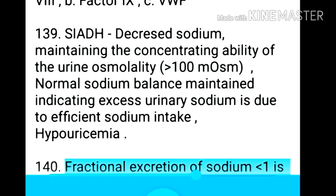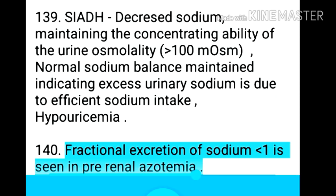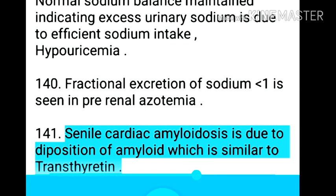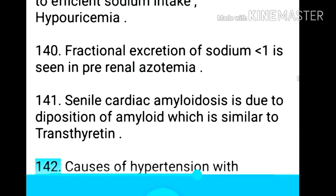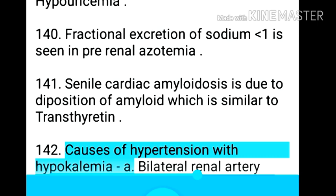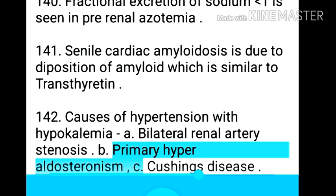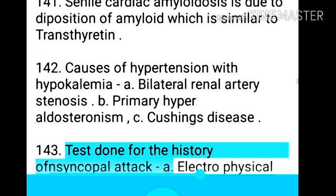Point 141: Fractional excretion of sodium less than 1 is seen in pre-renal azotemia. Point 142: Senile cardiac amyloidosis is due to deposition of amyloid similar to transthyretin. Point 143: Causes of hypertension with hypokalemia — bilateral renal artery stenosis, primary hyperaldosteronism, and Cushing's disease.